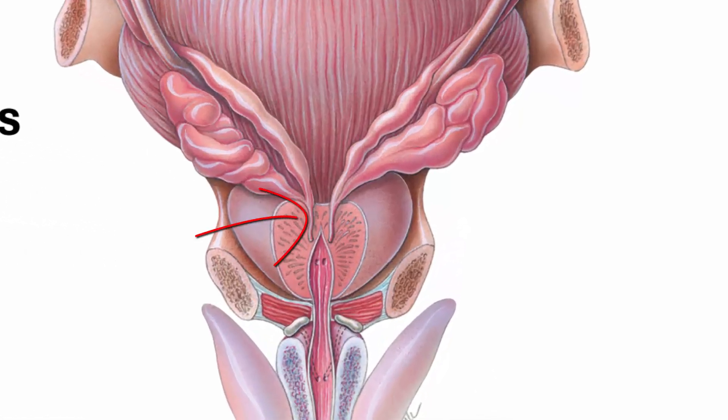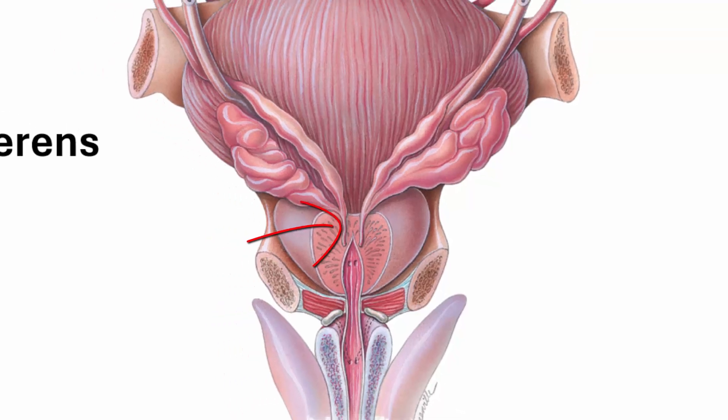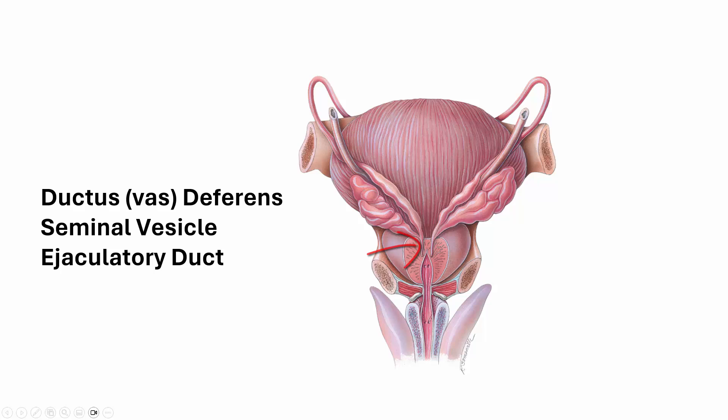The ejaculatory duct is where the seminal vesicle and the ampulla of the vas deferens, or ductus deferens, come in together, emptying into the prostatic urethra.